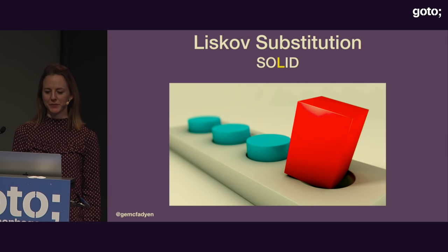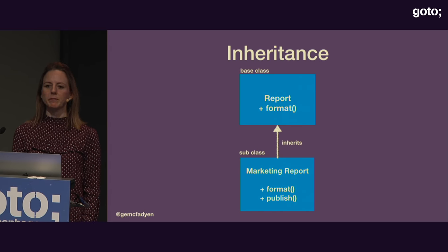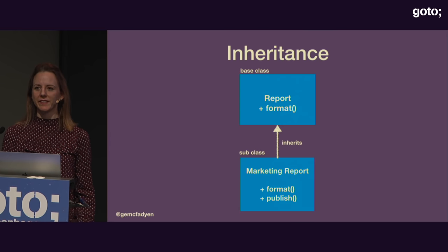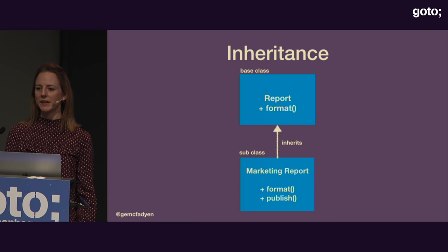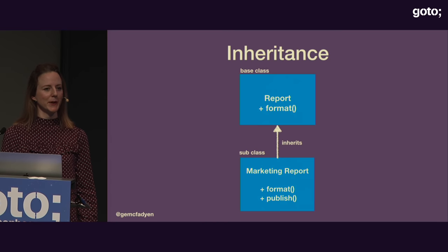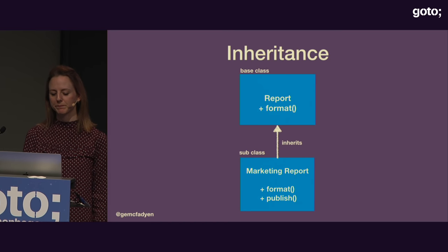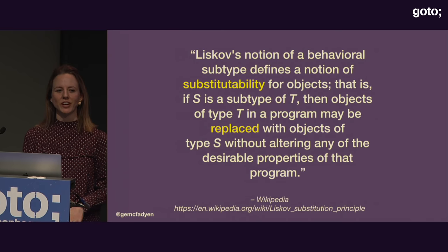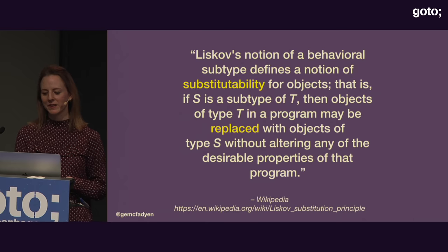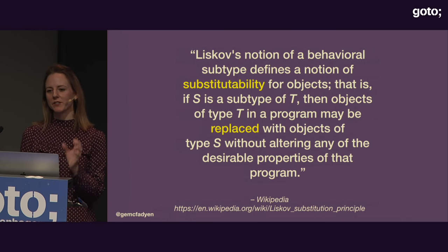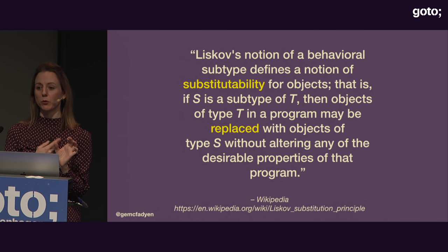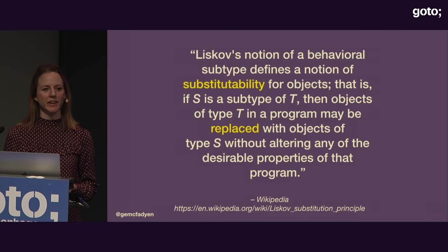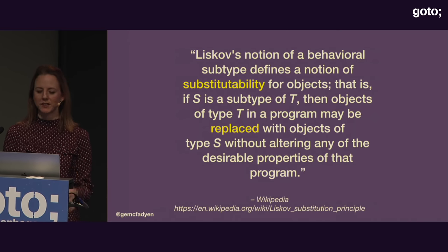The next principle is Liskov Substitution. In object-oriented languages we have the concept of classes, and classes can inherit behavior from other classes. In this example, we have a `Report` class which provides a `format` method, and a `MarketingReport` class which inherits this behavior as well as having some of its own. The official definition is quite complicated, but essentially it says: where you have a variable of the base type — in our example, `Report` — you should be able to switch in any of the subclass types without an undesirable effect on your system.